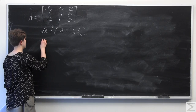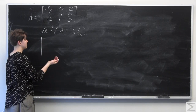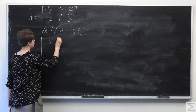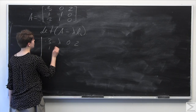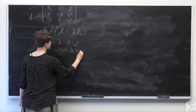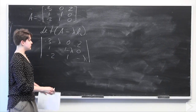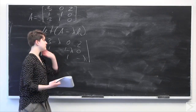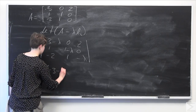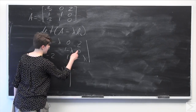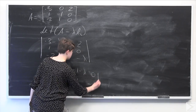We'll use the standard vertical bar notation for the determinant. We subtract lambda from the diagonal entries, giving us: negative 3 minus lambda, 0, 2; 1, negative 1 minus lambda, 0; and negative 2, 1 minus lambda. We need to calculate the determinant of this matrix.